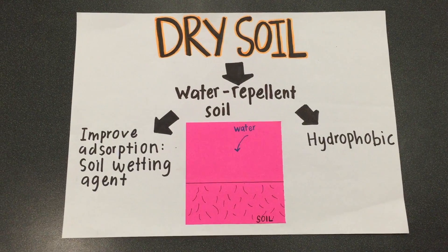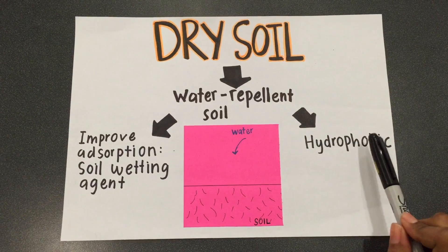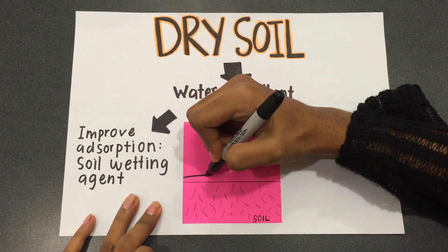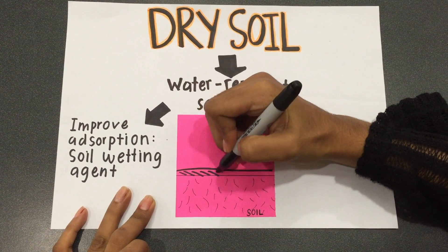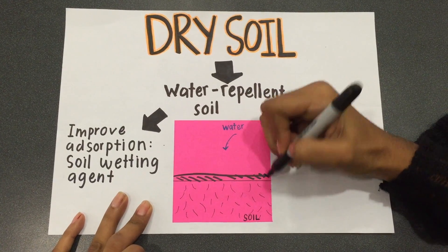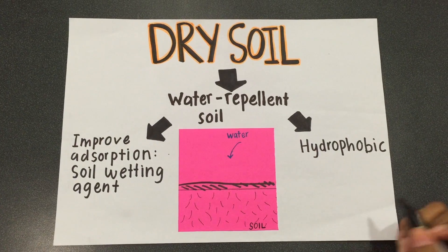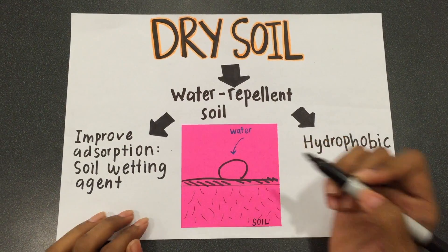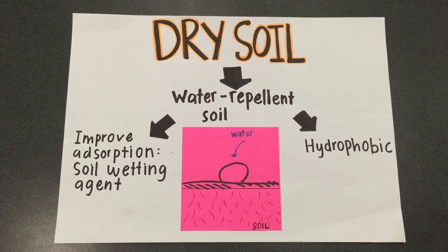What is dry soil? Dry soil, also known as water repellent soil, is hydrophobic. The hydrophobic phenomenon is caused by the decomposition of organic matter and microorganisms, causing the buildup of a waxy layer coating the soil. When water is added to the soil, water molecules stay on the wax layer creating a droplet. This shows that dry soil repels water.